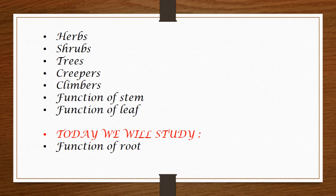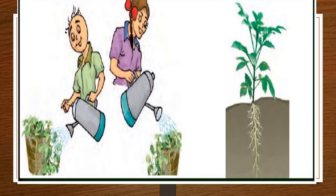Besides this, in this chapter we studied about the different parts of the leaf — the midrib, the veins, different kinds of venation. Today we will move further in this chapter and study what is the function of the root, and what is the importance of the root in a plant.